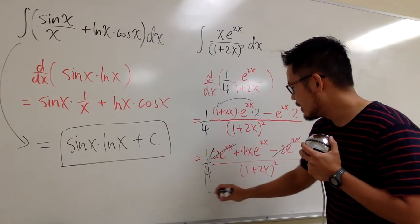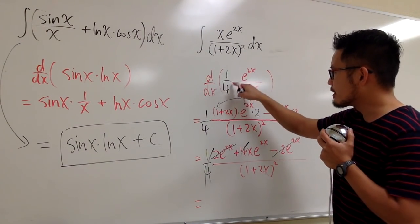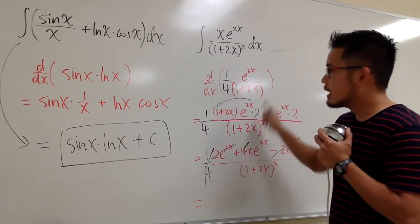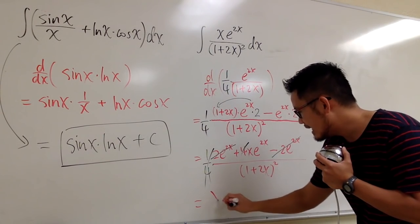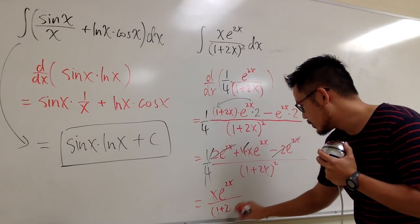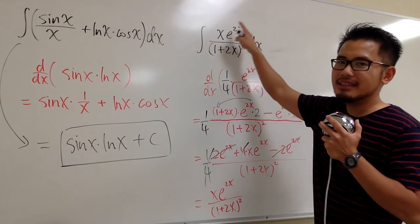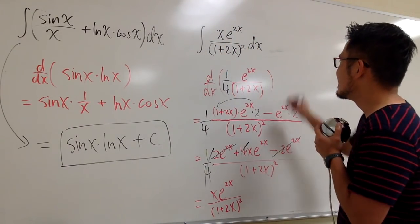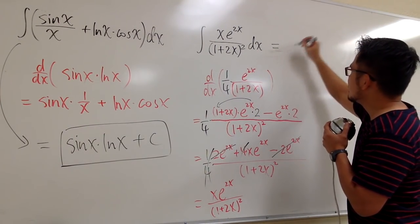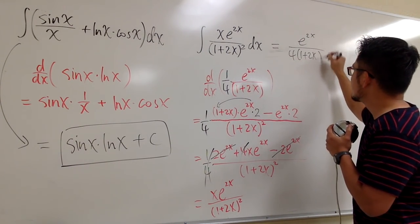Because this 1 over 4 will cancel with this 4. So, at the end, if we differentiate 1 over 4 times e to the 2x over 1 plus 2x in parentheses, if we differentiate this, we'll end up to be x e to the 2x over that, which is the 1 plus 2x to the second power. And this is exactly our integration question. So, what does that mean? It means that the answer to this has to be that. We are done. So, let's write it down as e to the 2x over 4, parentheses 1 plus 2x. And we are done. Plus c. This is it.